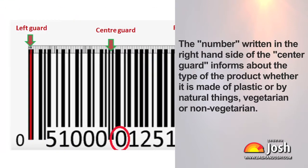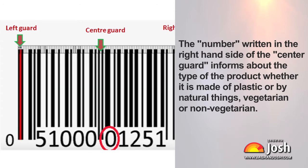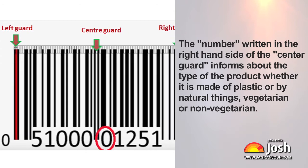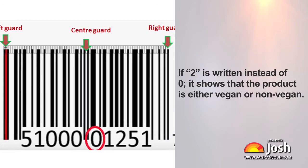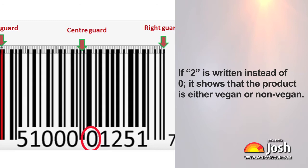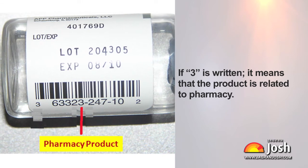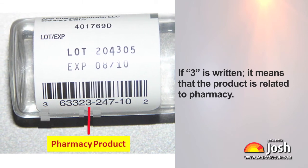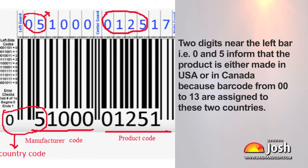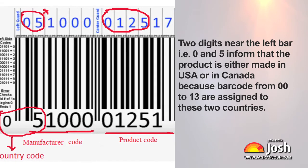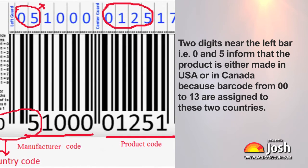The number written to the right-hand side of the centre guard informs about the type of the product — whether it is made of plastic or natural materials, and whether it is vegetarian or non-vegetarian. If 2 is written instead of 0, it shows the product is either vegan or non-vegan. If 3 is written, it means the product is related to pharmacy. Two digits near the left bar — 0 and 5 — indicate the product is made in the USA or Canada, as barcodes from 00 to 13 are assigned to these two countries.